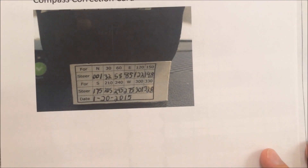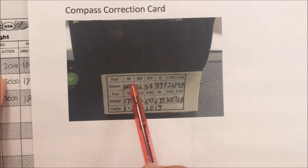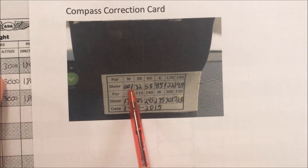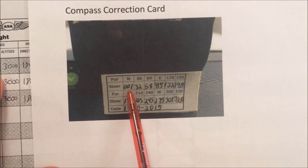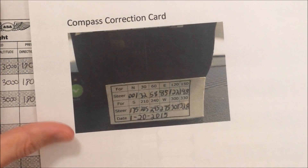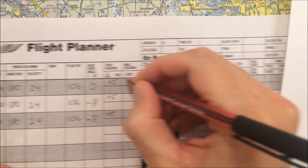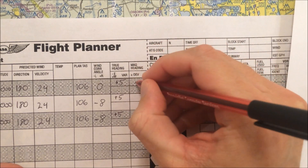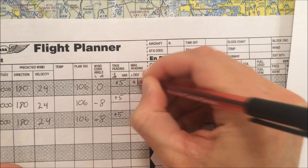So what direction are we going? Well, for starters, we're going north. And it says here if we're going north, we're supposed to steer 001. So that's a correction of plus 1. We're going to make that modification here, and our magnetic deviation is plus 1 for north.